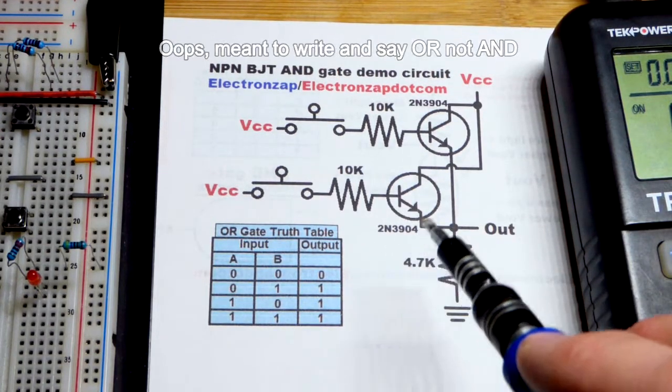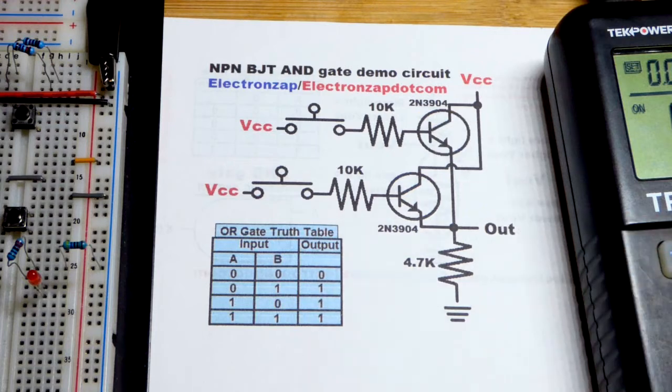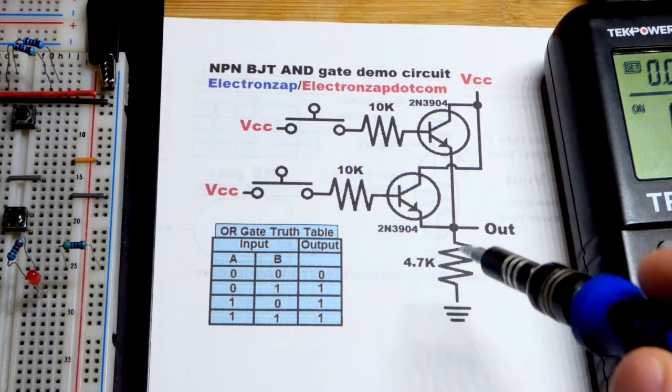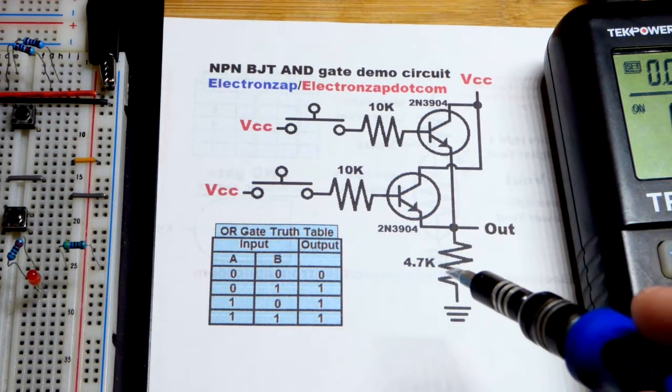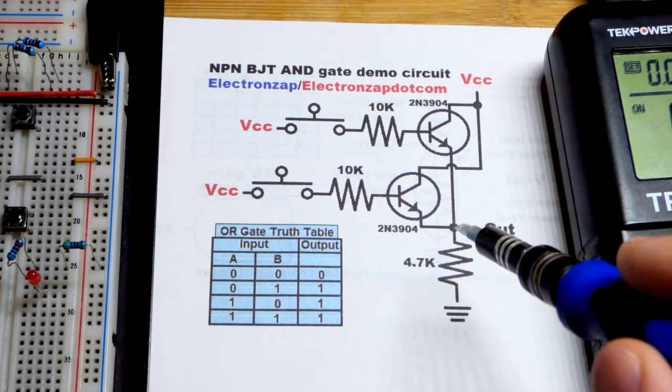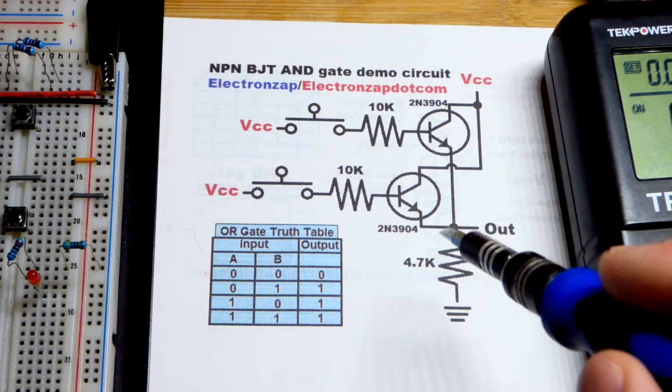I did find the 2N3904s that I was looking for earlier, and we're going to use them again. The 4.7 kilohm resistor, I don't know why I picked that value. This is an old diagram I'm reusing, but a wide range of resistor values should work here. That helps set the voltage to the output.